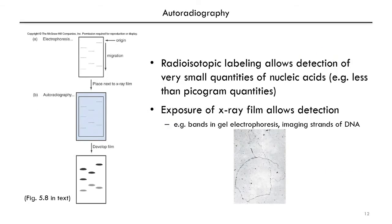For radioactively labeled tracers, if you're looking at nucleic acids you can radioisotopically label the nucleic acid and that allows detection of very small quantities of your DNA or RNA. Radioisotopic labeling allows for very sensitive detection of DNA. Quantities of DNA less than a picogram can be measured — that's less than a trillionth of a gram.